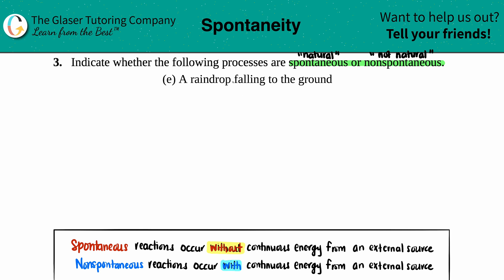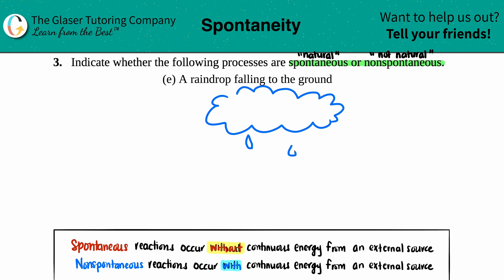Now for a raindrop falling to the ground — here's my little cloud, and there are the raindrops. Okay, that's as good as you're going to get from me. I can write very nicely but I cannot draw. Anyway, as the rain is coming to the ground, is this a natural process or does it need some external source?